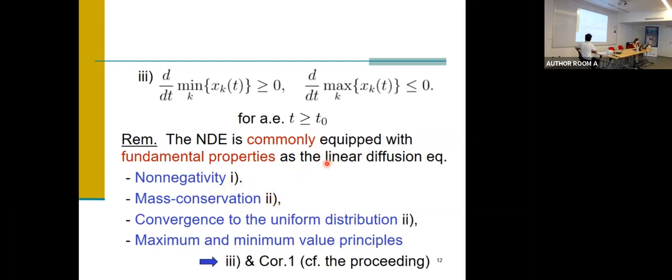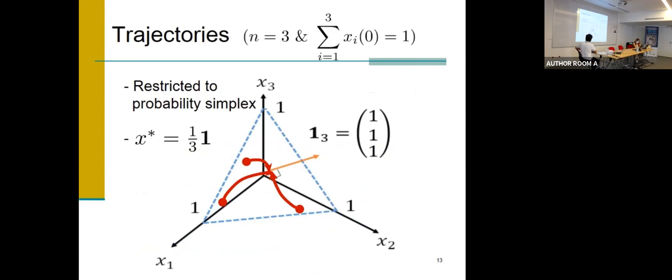Here this is the remark: so the NDE network diffusion equation we consider is qualified as a diffusion equation because this kind of properties of the ordinary linear diffusion equation is also possessed by the NDE. So here is the image of the trajectories on the probability simplex.